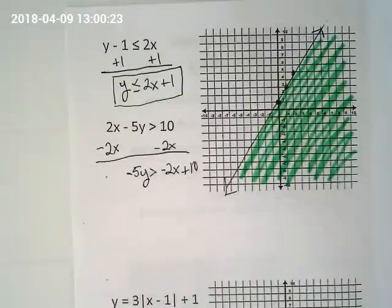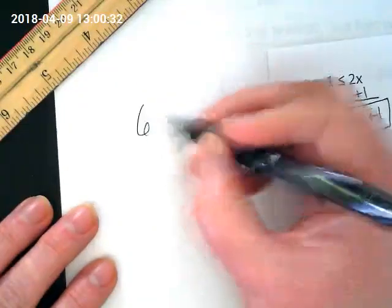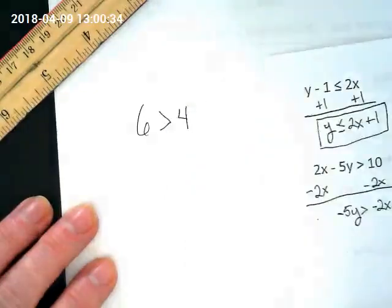If I divide by negative 5, what happens with our symbol? Okay, and let's do a quick reminder of why that happens. If I have 6 is greater than 4, is that a true statement?